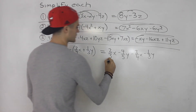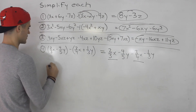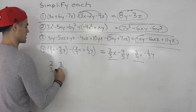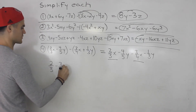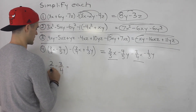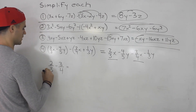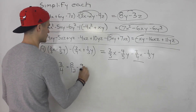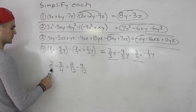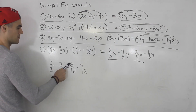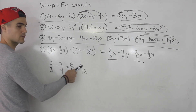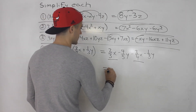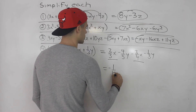Now collect like terms. For the x terms: 2 over 3x minus 3 over 4x. We can work out the fractions on the side — common denominator 12. So 2/3 becomes 8/12, and 3/4 becomes 9/12. That gives us negative 1 over 12. So we end up with negative 1 over 12x.